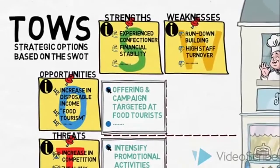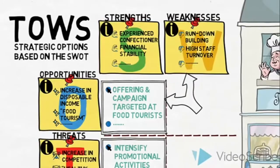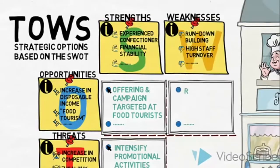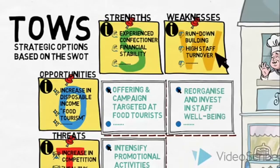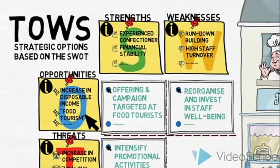Let us move on to see what strategic options our weaknesses and opportunities could create. We could reorganize and invest in staff wellbeing in order to create a more consistent and positive café experience for our customers. If we are to take advantage of the general increase in disposable income and trends in our favor, then we will need to minimize our weakness of the poor staff retention rates.